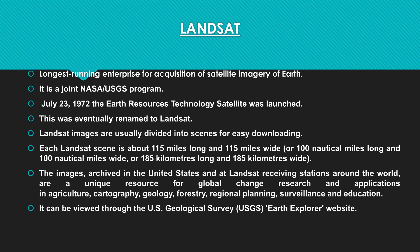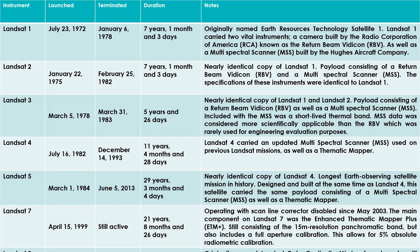This table shows the instruments from Landsat 1 to Landsat 8, including launch dates, termination dates, duration, and notes. Landsat 1 was launched on July 23, 1972, and terminated on February 28, 1978, serving a period of seven years, one month, and three days. Landsat 2 was launched on January 22, 1975, and terminated on February 25, 1982, also serving seven years, one month, and three days.